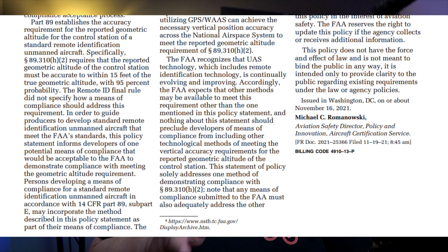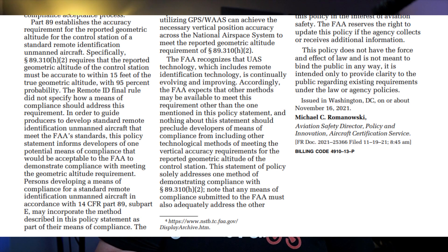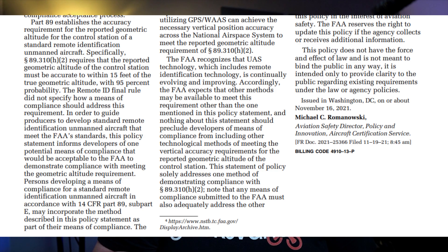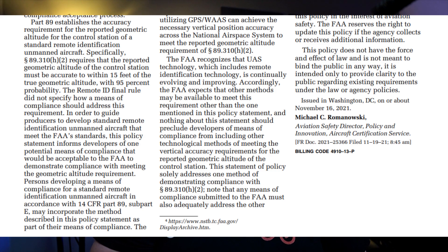So essentially, what they're saying here is that they felt the need to clarify that any Remote ID signal will need to accurately pinpoint the remote pilot's location, and rather than stipulate the design or physical tech involved, they have provided a path to achieving this. Later in the policy statement, the FAA clarifies that Part 89 specifically requires the reported geometric altitude of the control station must be accurate to within 15 feet of the true geometric altitude, with 95% probability. The Remote ID final rule did not specify how a means of compliance should address this requirement.